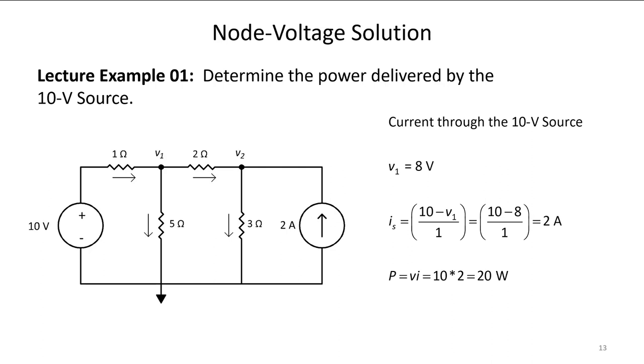The power again is 20 watts, so you get to see the problem solved a couple different ways. I think in this case probably node voltage is faster, but we'll use source transformations in other ways. This has been an introduction to source transformations.